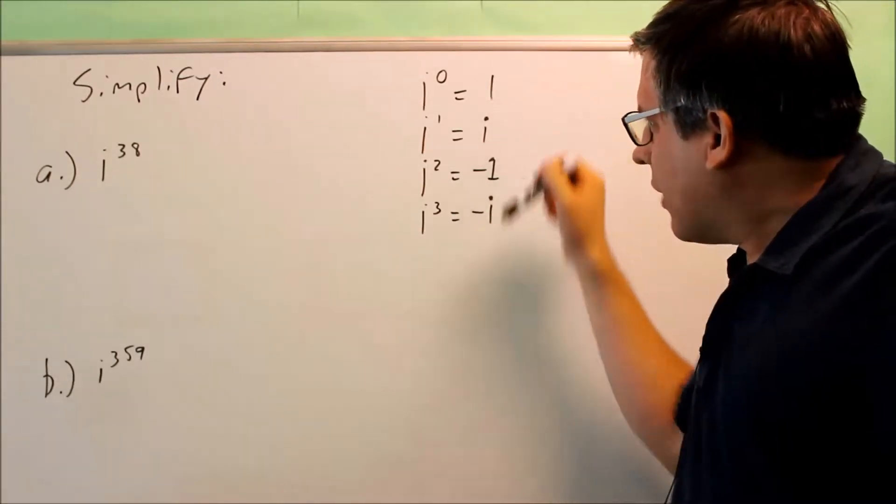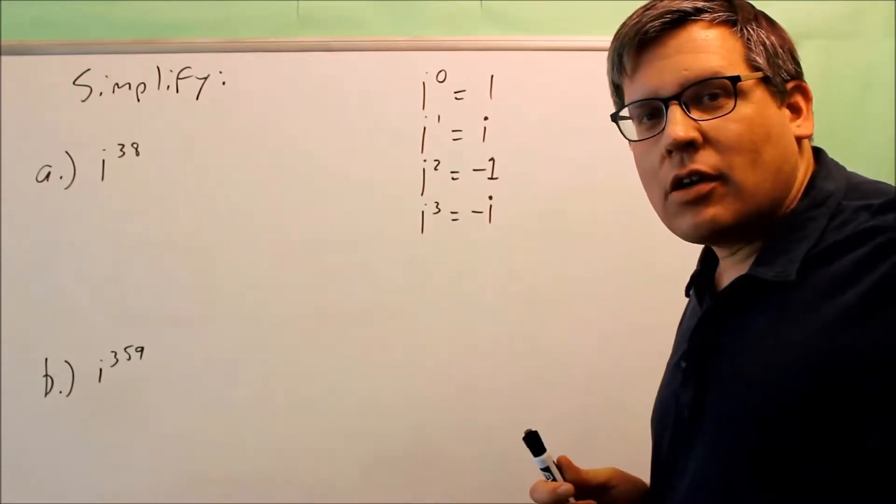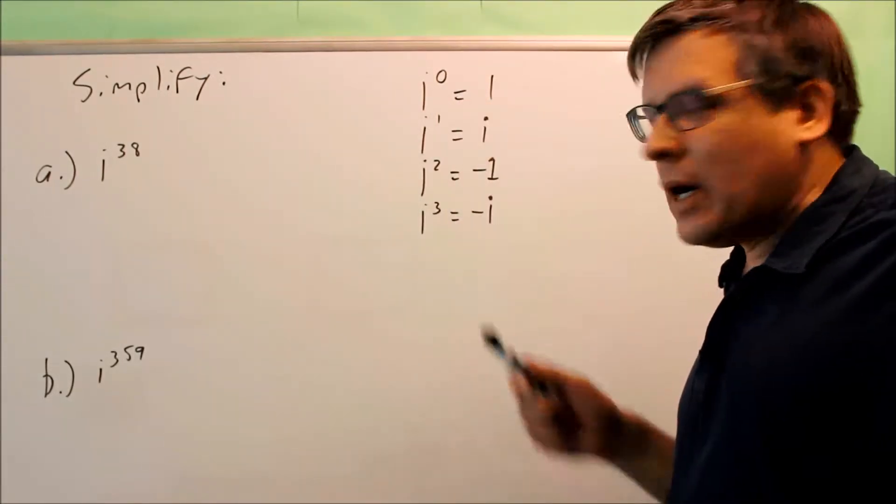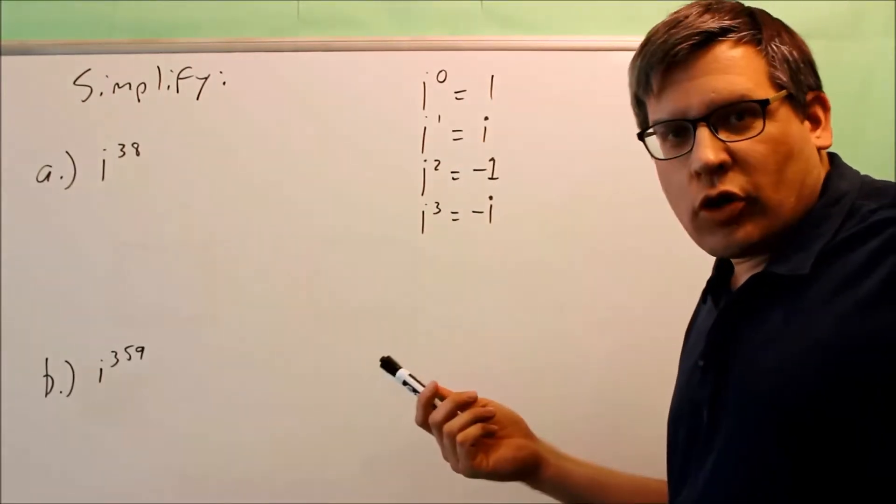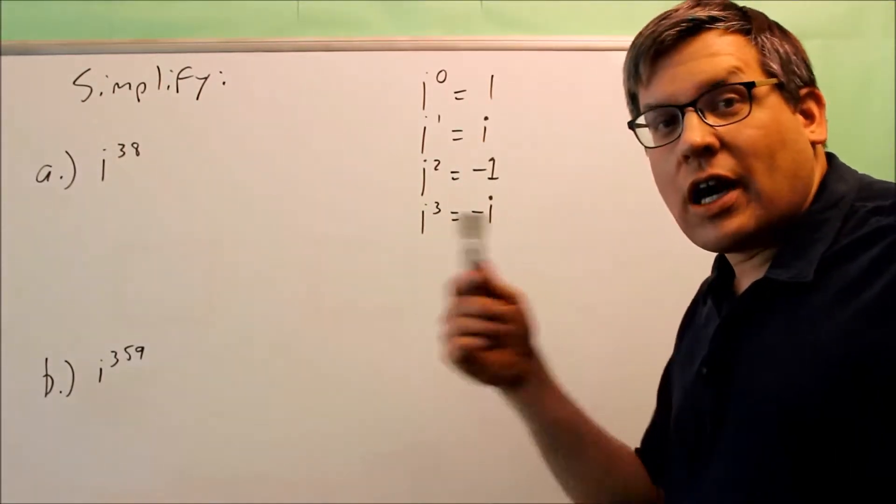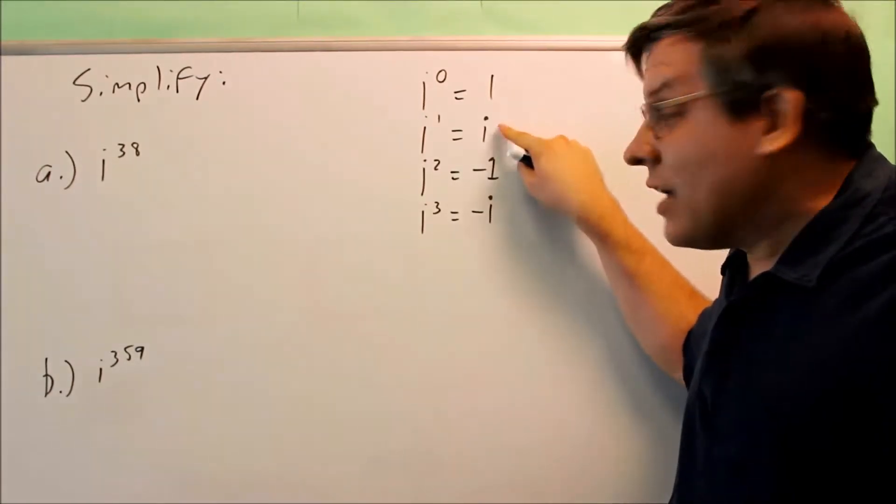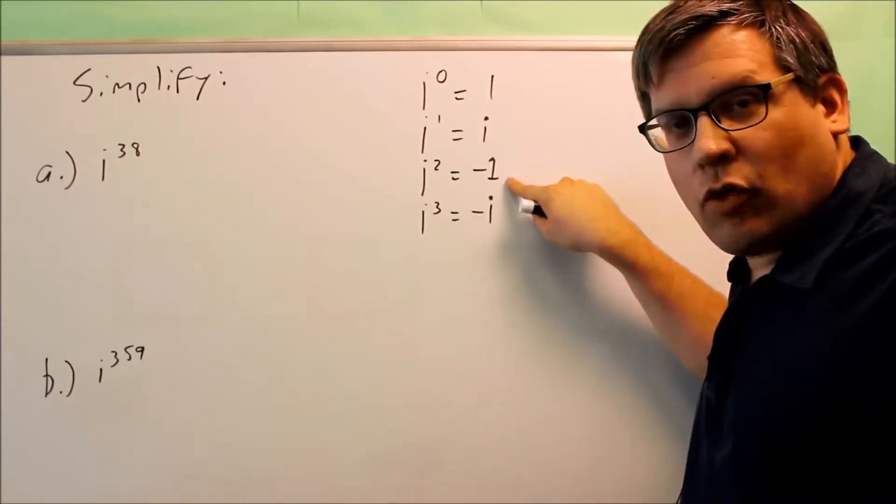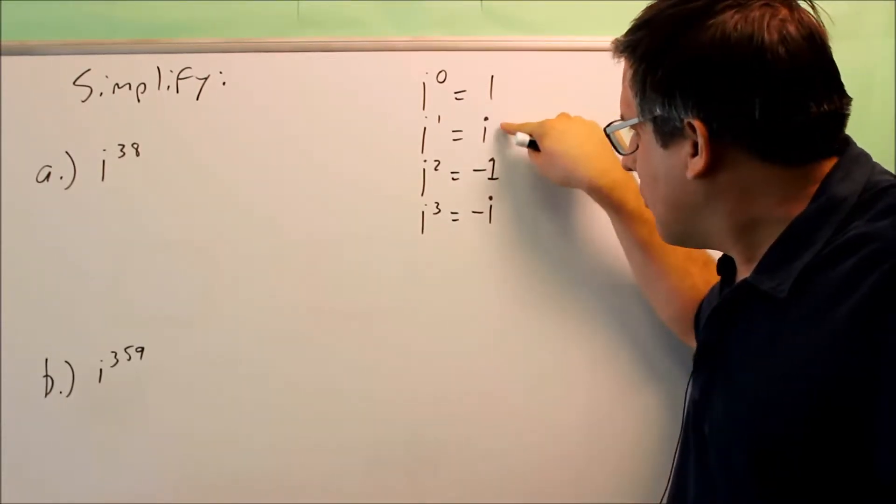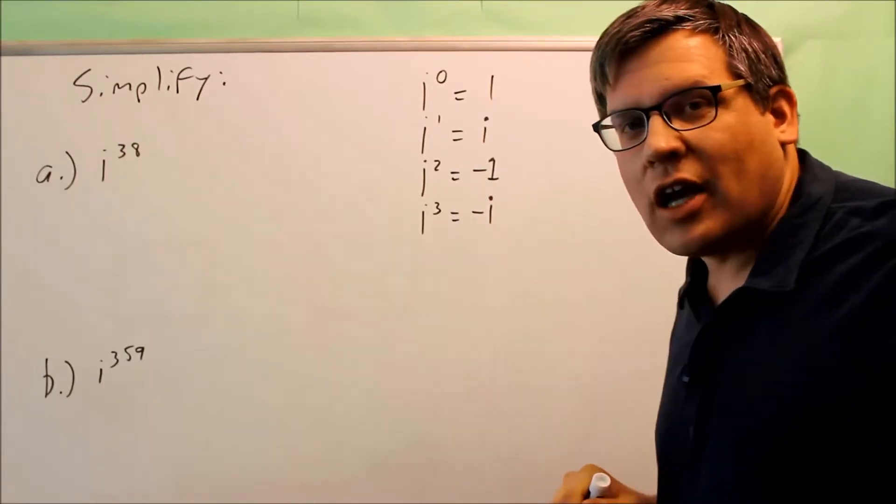However, we do have a pattern depending on what power you have on top of the i. So i to the 0 power is going to be 1. i to the first power, that's the square root of negative 1. So that's our definition: i is equal to the square root of negative 1, or you can just leave it as i. i to the second power is equal to negative 1 because if you square that one, you'll get negative 1. And i to the third power is negative i.